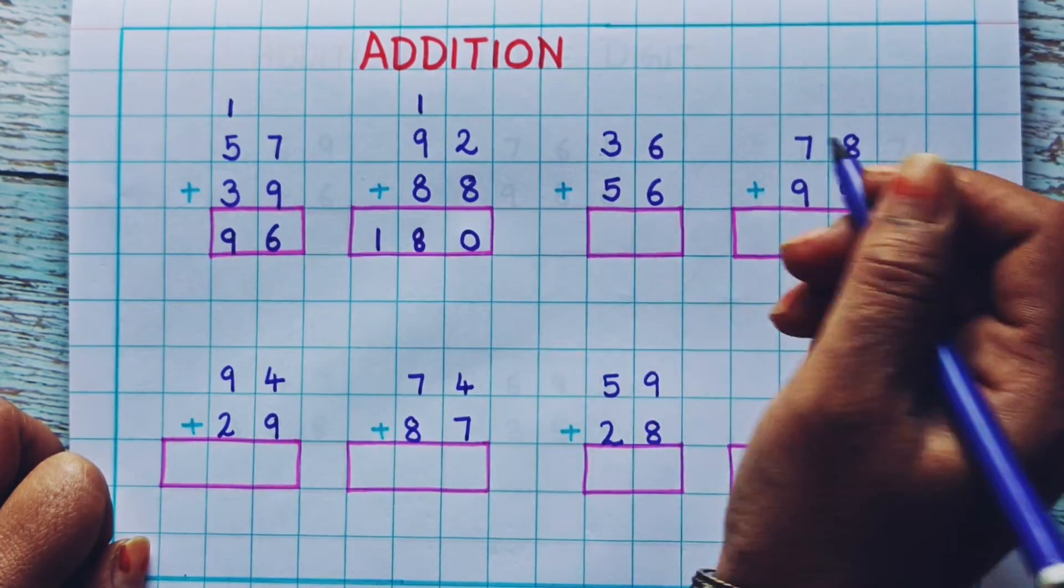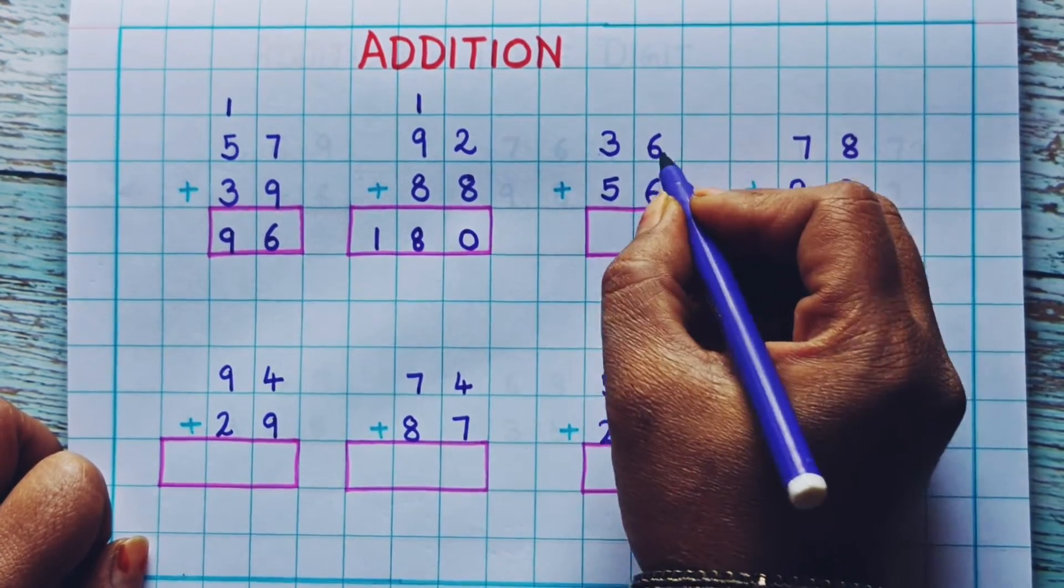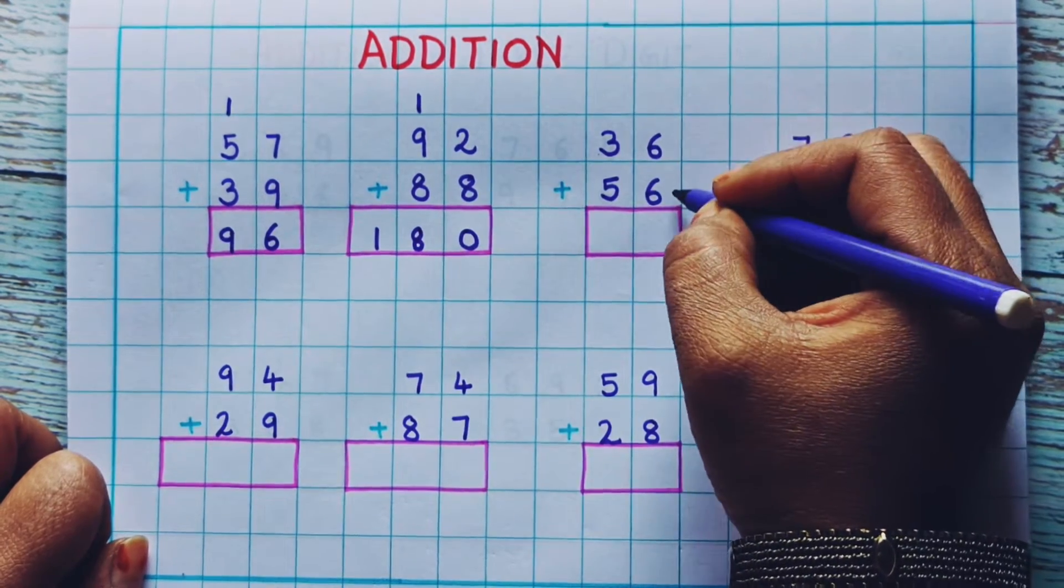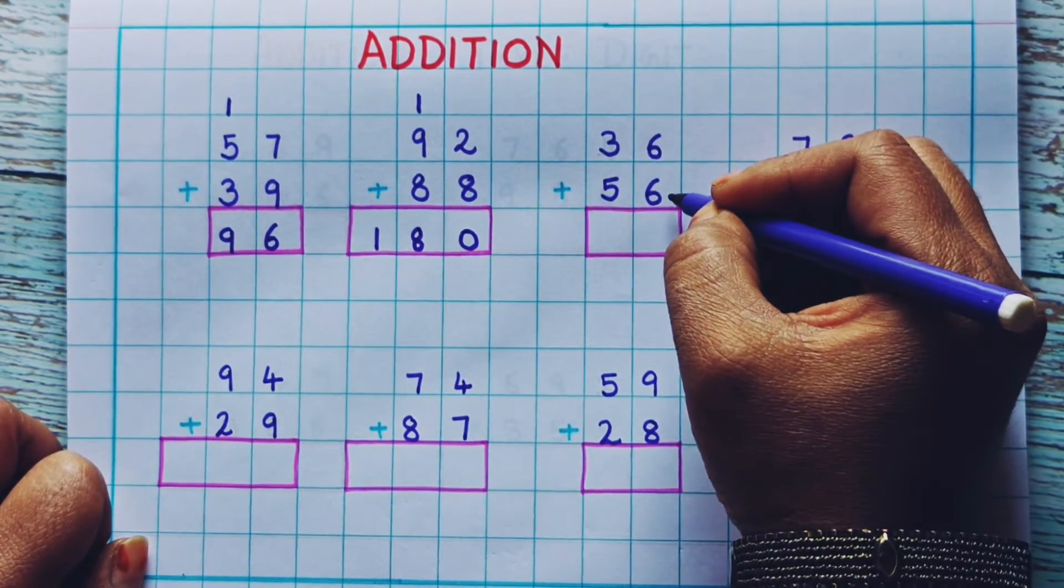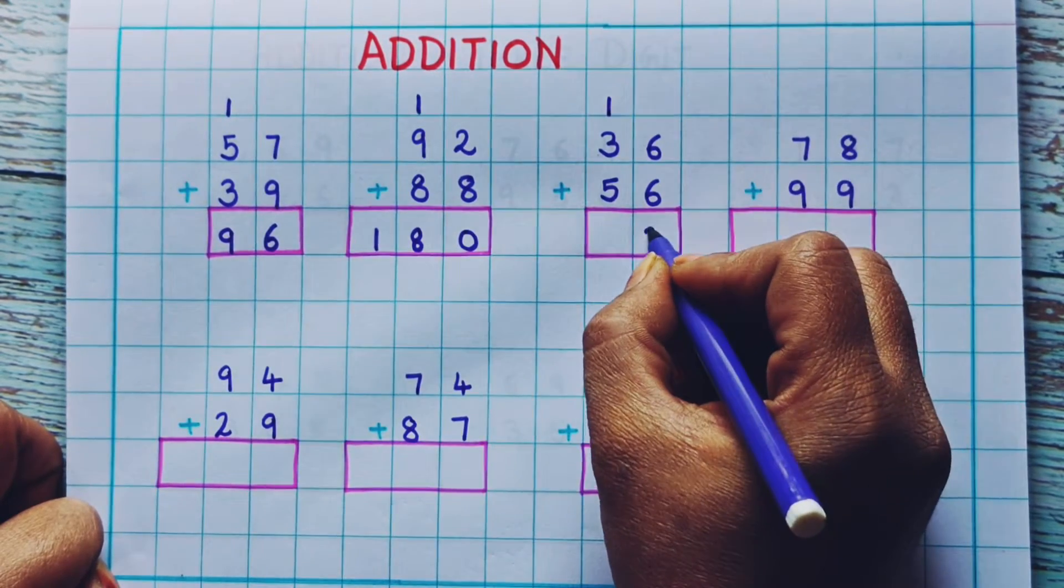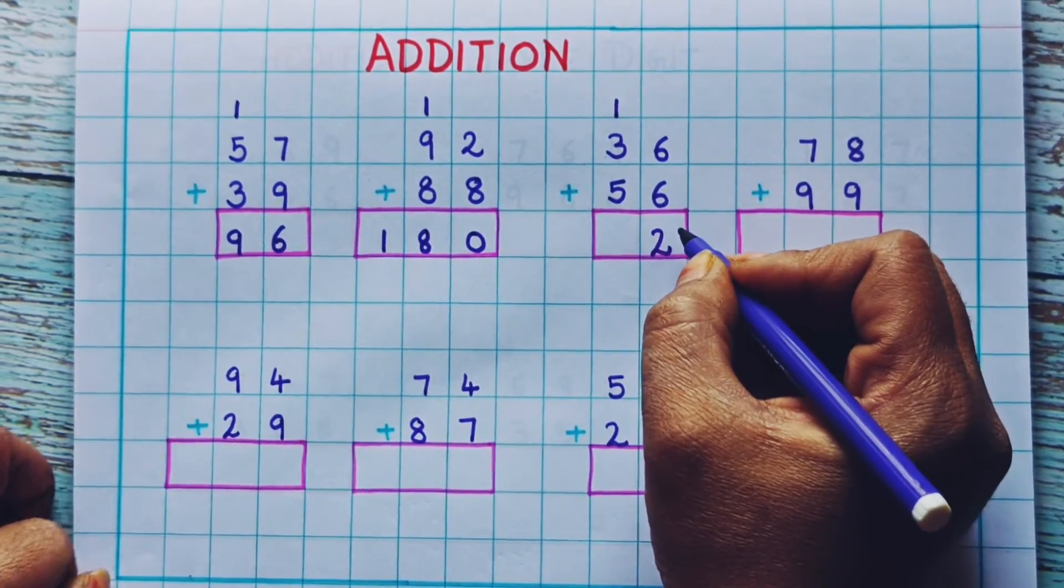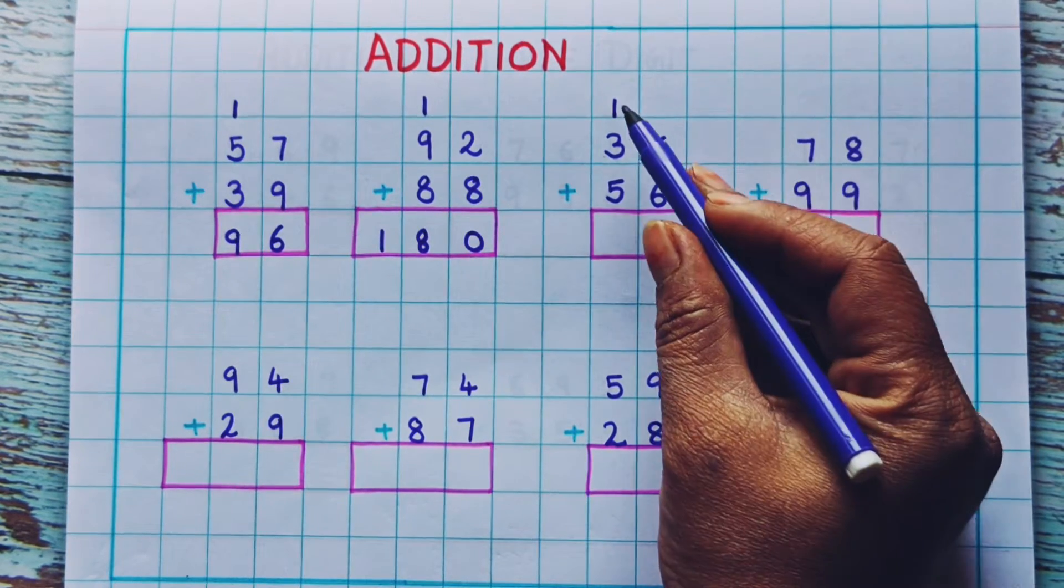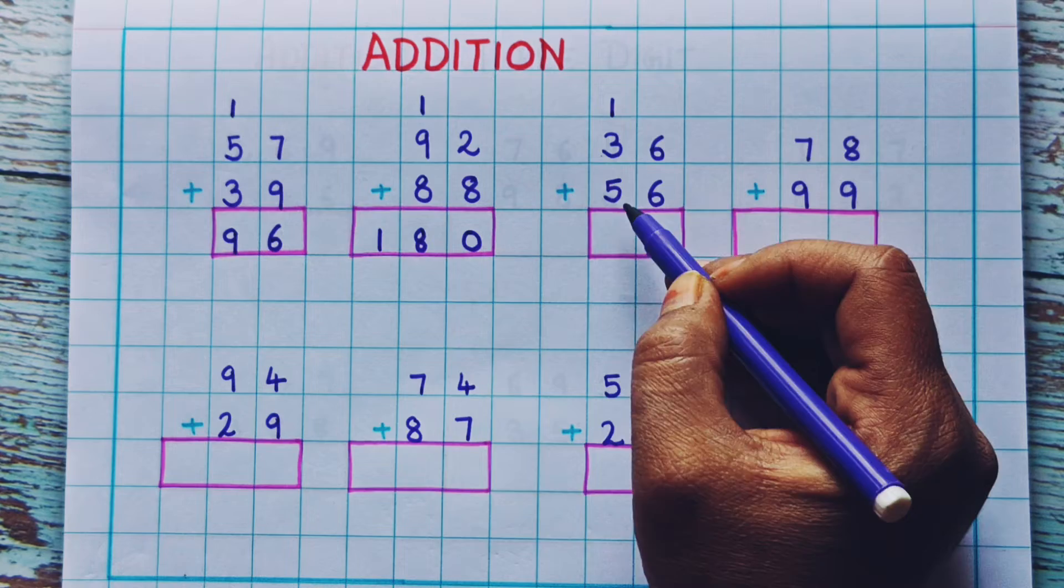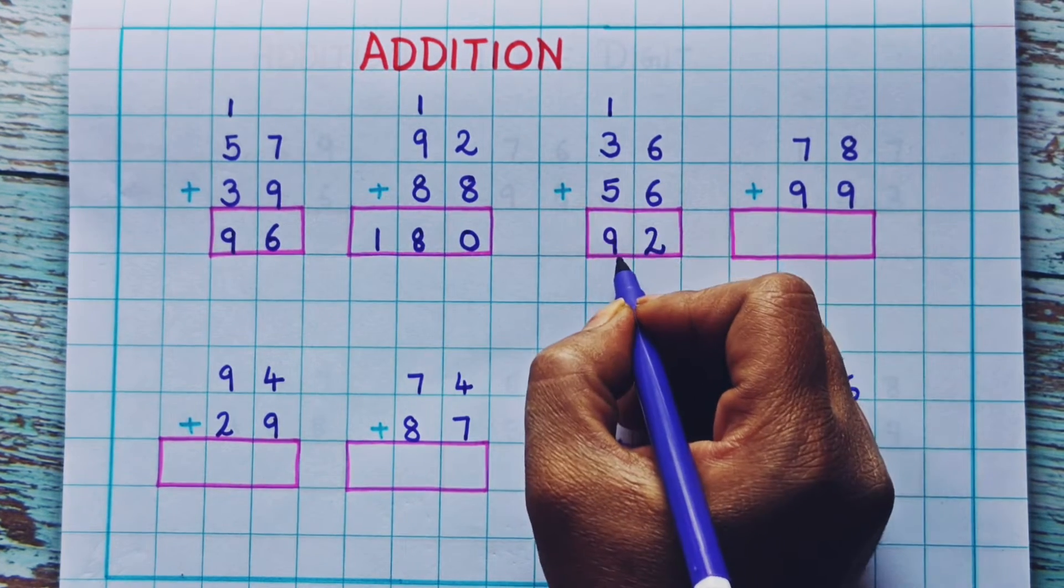Now the next one. 36 plus 56. We will start the addition from here. 6 plus 6 is 12. So I will write here 1 and here 2. Now 3 plus 1 is 4. 4 plus 5 is 9. So the answer is 92.